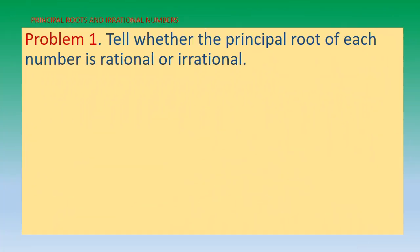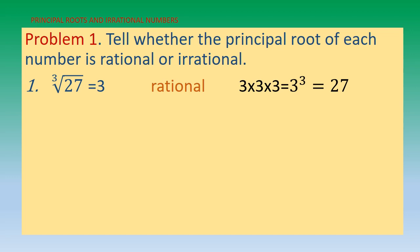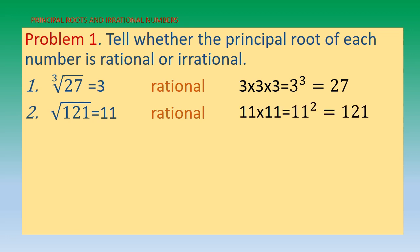Problem number one: tell whether the principal root of each number is rational or irrational. Number one: ∛27 = 3. This is rational because the result is the whole number 3, since 3×3×3 = 3³ = 27. Number two: √121 = 11. This is rational because 11×11 = 11² = 121, so √121 = 11.